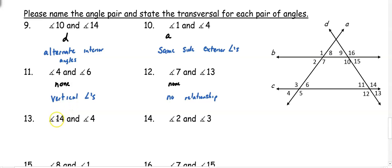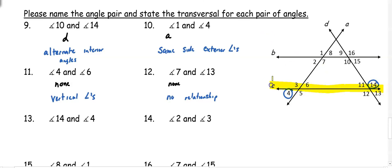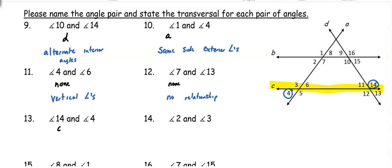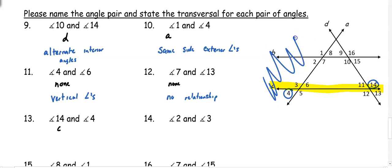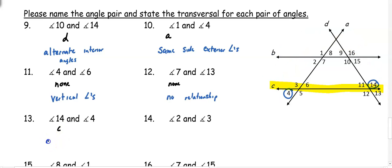Number 13: angle 14 and angle 4. Both angles are touching line C, so C is our transversal. Looking at those angles, they're on opposite sides of the transversal and outside the lines — outside here and outside here — so these are alternate exterior angles.